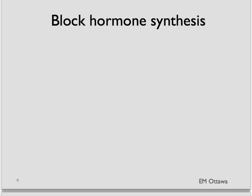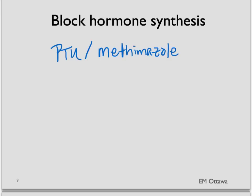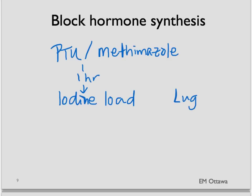We first block the thyroid hormone production by the thyroid gland. We do this by giving a medication called PTU, or propylthiouracil. Another medication called methimazole can also be given. About an hour after this, we also block the release of hormone that has already been made by iodine loading the body, in the form of Lugol's solution or SSKI.